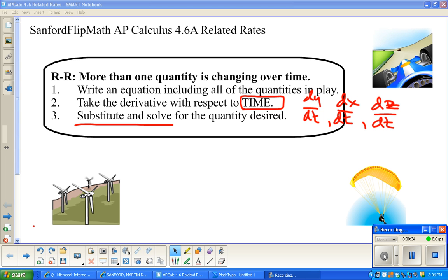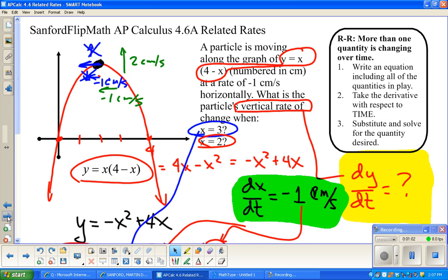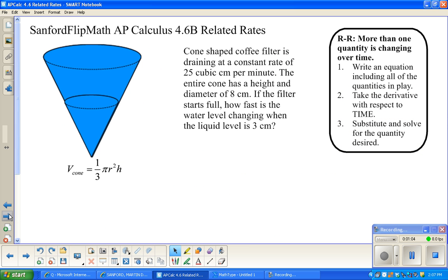This is the second video for related rates, and we're going to focus on really just one example today, a classic example. I know this screen looks pretty familiar. Remember that related rates is about some kind of a situation where more than one quantity is changing over time. As time changes, there's more than one thing changing. The basic plan is to write an equation including all of those quantities, take the derivative with respect to time, and then we just substitute whatever we're told and solve for whatever we want.